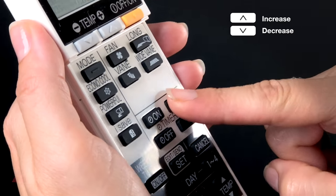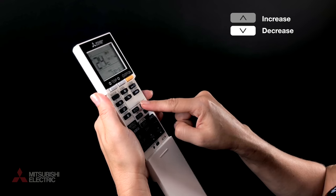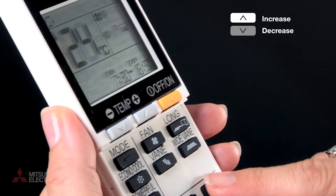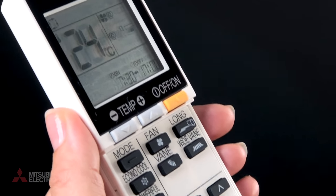Again, use the increase and decrease buttons to set your desired off time. For this example, we'll program the unit to switch off at 5 p.m.